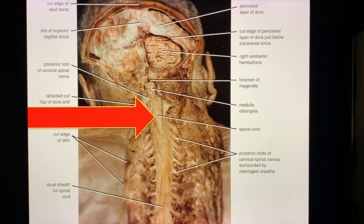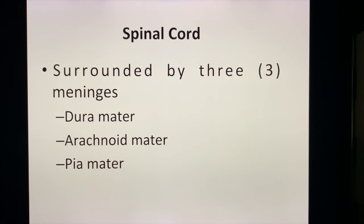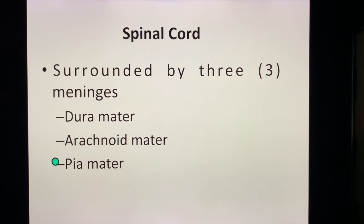Here is a gross picture of the spinal cord, with the tip of the red arrow and where the green pointer is. As you can see, this is the medulla oblongata, the caudal portion of the brain, and the spinal cord is the caudal extension of the central nervous system. Now, the spinal cord has three meninges: these are the dura mater, the arachnoid mater, and the pia mater.